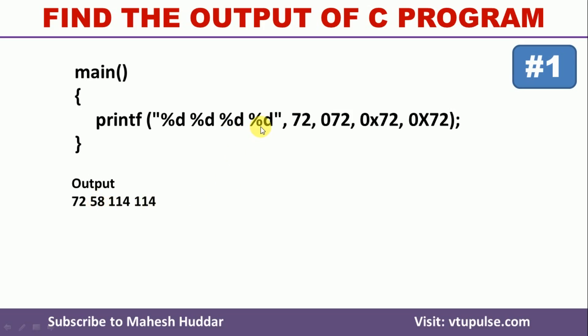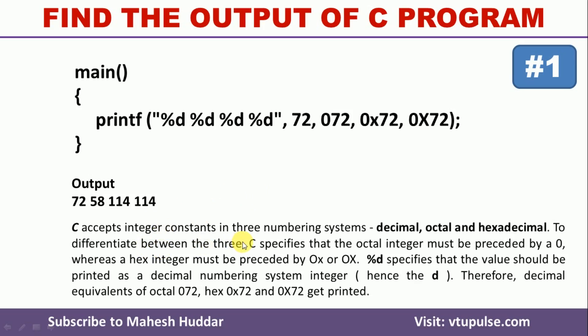In the third and fourth place, the decimal equivalent of hexadecimal 72 is displayed, that is 114 in this case. This is the brief explanation for this particular program.